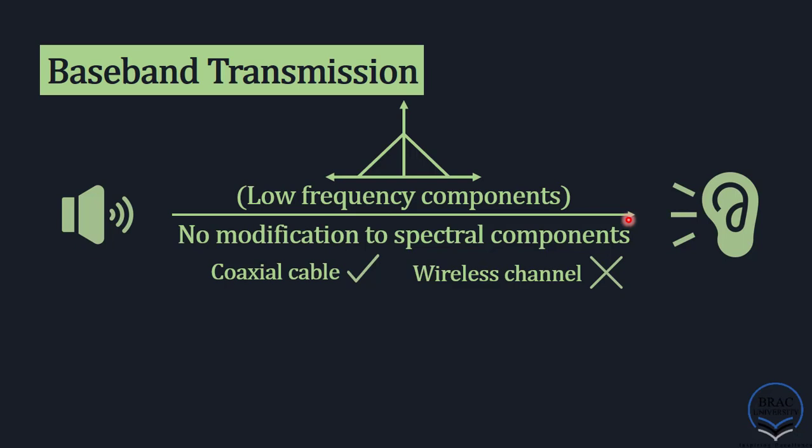One thing to note: low-frequency components are more prone to interference and attenuation. That's why baseband transmission is not suitable for transmitting a signal over a long distance. It is better to transmit a baseband signal through coaxial cable, and using a wireless channel is not recommended.